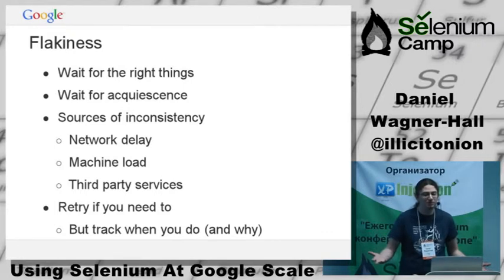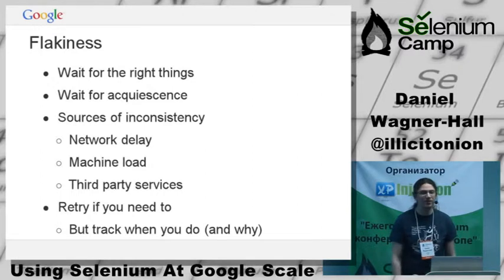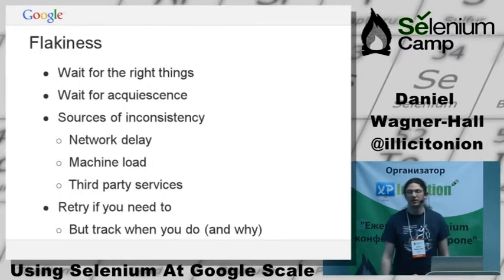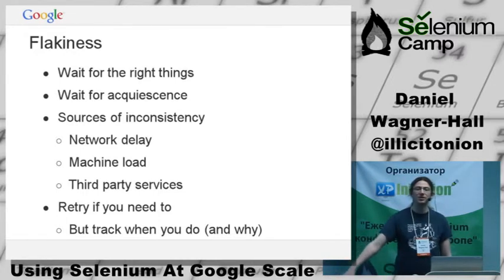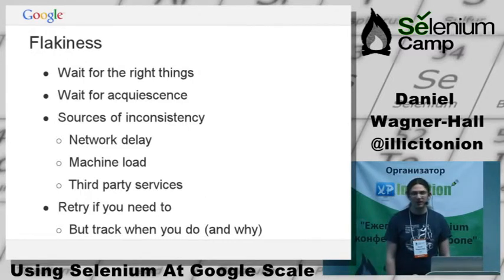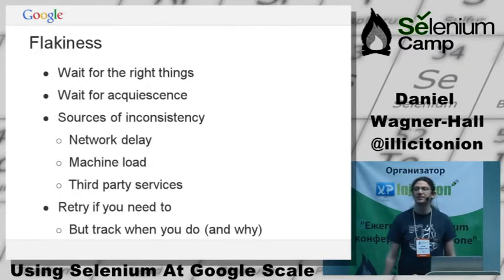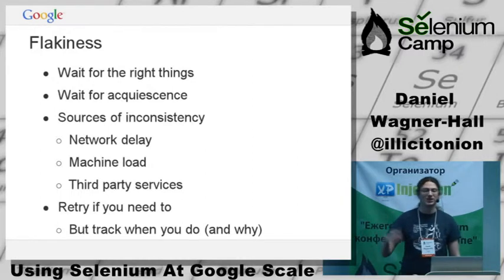Look at every source of inconsistency. Every time a test fails for no apparent reason, we look at why. You should never see a flake and just rerun it — it won't be any better tomorrow and will get worse as you write more tests. But if every time something fails for no apparent reason you track down why and make sure it never happens again, tomorrow things will be better. Apparently in 18 months you'll have 100% stable tests.